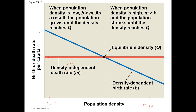This graph is density dependent. It shows that if you have very few individuals, you have more births than deaths. M stands for mortality, which means death rate. So you have more babies being born when you have a very low population. If you have a very high population, it's the opposite — you actually have more death than birth.